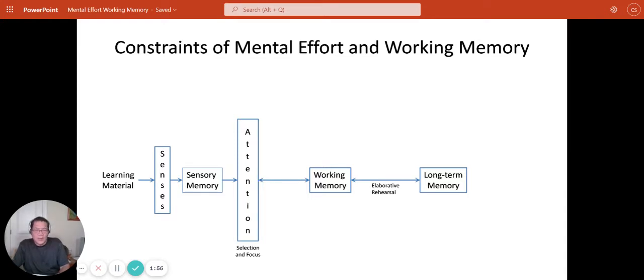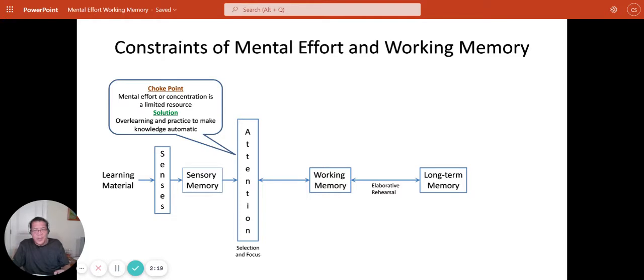Attention has two functions, both of which are really critical for learning. The first function is selection. It selects what information is relevant and filters everything else out. That's the selective nature of attention, and it's a challenge on its own and the subject of a separate video. What we're concerned with here is the second function of attention, which is mental effort or concentration. You always have a limited amount of mental effort or concentration available to you. In other words, it's always a limited resource. You only have a certain amount of concentration you can devote to any given task.